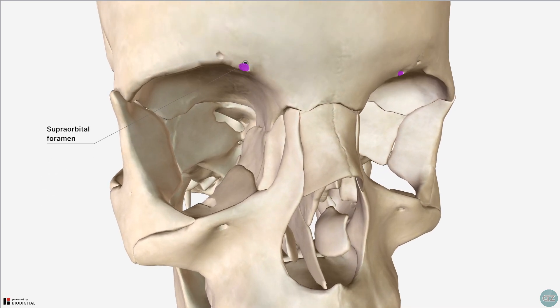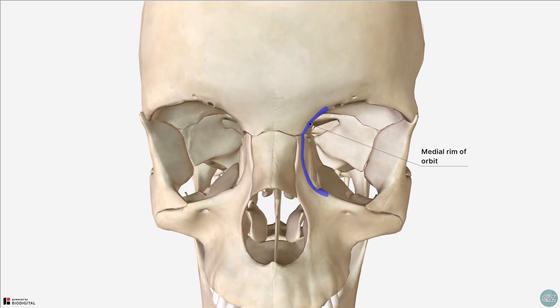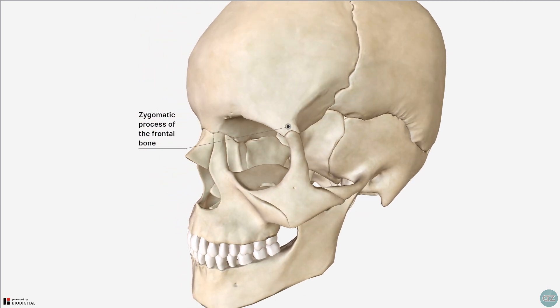The supraorbital foramen, also known as the supraorbital notch, is found at the medial part of the superior rim of each orbit, and it transmits the supraorbital nerve and vessels. Looking at the medial part of the frontal bone, it dips down inferiorly and forms part of the medial rim of the orbit. Laterally, the frontal bone projects inferiorly to form the zygomatic process of the frontal bone, which articulates with the frontal process of the zygomatic bone.